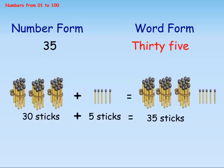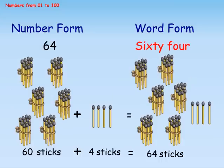Number form 35, word form 35. Here, 30 sticks plus 5 sticks equals 35 sticks. Number form 64, word form 64. Here, 60 sticks plus 4 sticks equals 64 sticks.